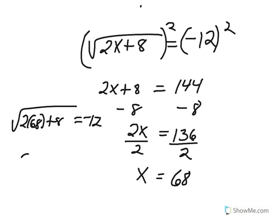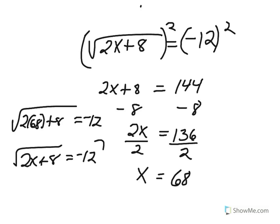However, if you had looked at the original problem, we might have seen that we have a radical being set equal to a negative number. However, we know no radicals can ever equal negative numbers. Therefore, we probably could have seen that there was no solution to this from the beginning and not actually had to go through the algebra.